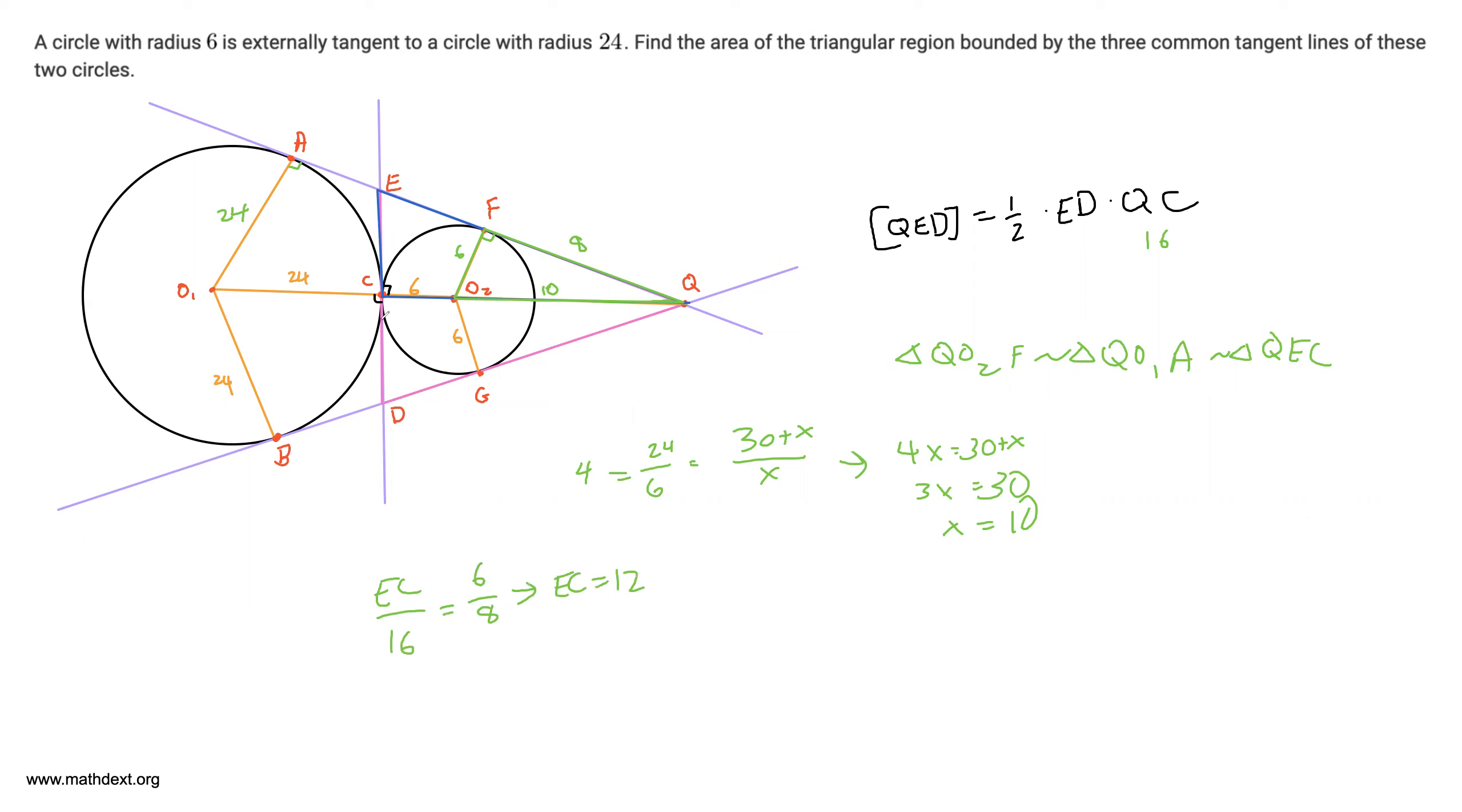And we already specified that EC is equal to CD. So ED is equal to 24. So let me put 24 there. Half times 24 times 16, that's the area of triangle QED, which is what we wanted. So we can just calculate half times 24 times 16, which we end up with 192. So we are done. Thanks for watching, and I will see you next time.